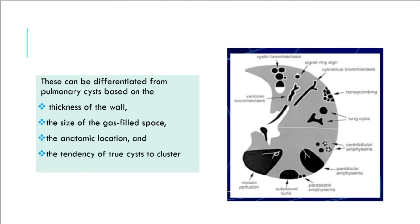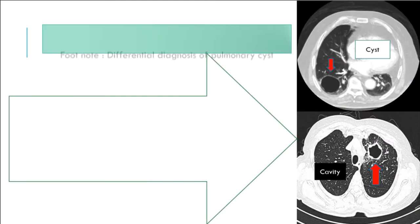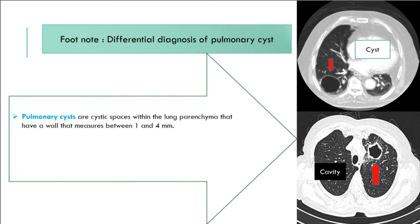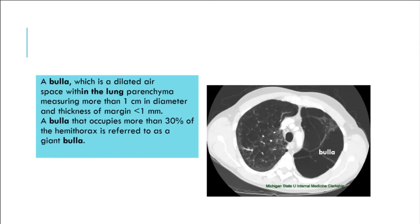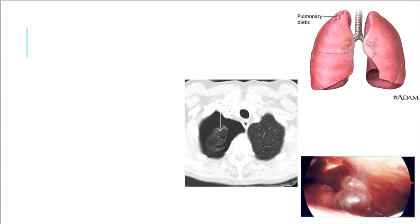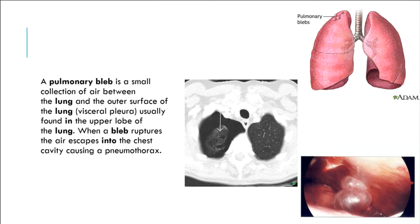These can be differentiated from pulmonary cysts based on thickness of the wall, size of the gas-filled space, anatomic location, and the tendency of true cysts to cluster. Differential diagnosis: pulmonary cysts are cystic spaces within the lung parenchyma with a wall measuring 1 to 4 mm. Pulmonary cavity has wall thickness greater than 4 mm. Bleb has wall thickness less than 1 mm at the lung surface. A bulla is a dilated air space within the lung parenchyma measuring more than 1 cm in diameter with margin thickness of 1 mm.